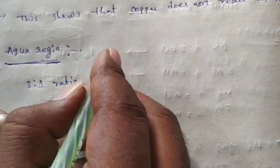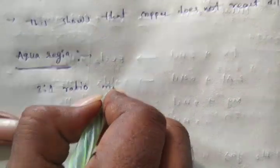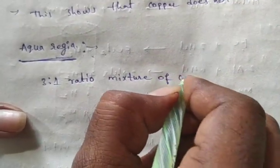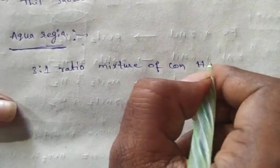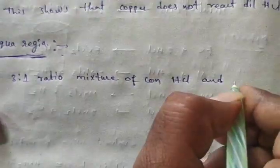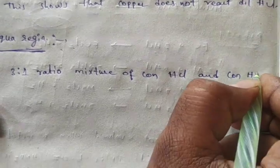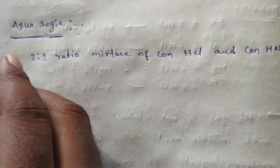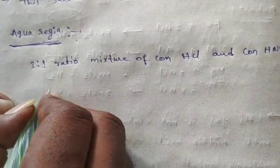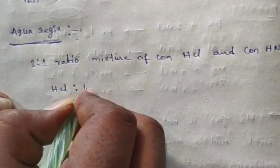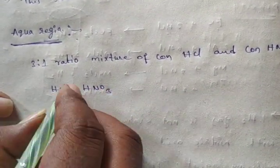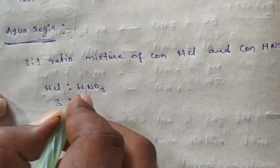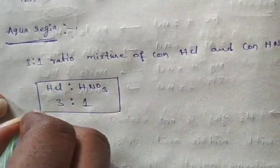The 3:1 ratio mixture of concentrated HCl and concentrated HNO3 — hydrochloric acid and nitric acid — the ratio of concentrated HCl to concentrated HNO3 is 3:1. This is called aqua regia.